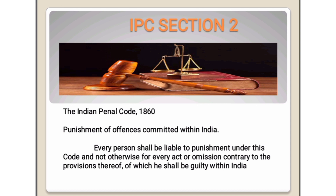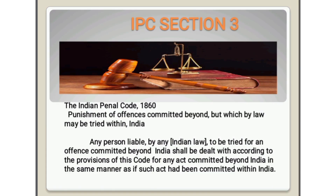Section 2 — Indian Penal Code 1860: Punishment of Offenses Committed Within India. Every person shall be liable to punishment under this code, and not otherwise, for every act or omission contrary to the provisions thereof of which he shall be guilty within India.